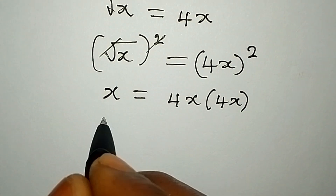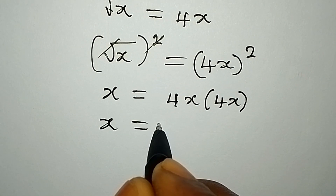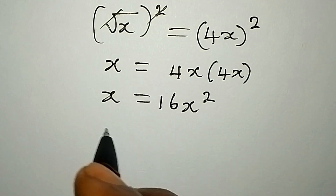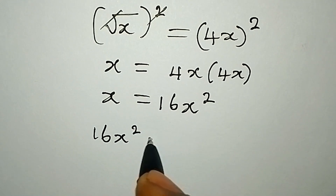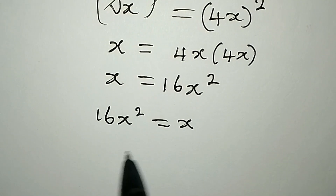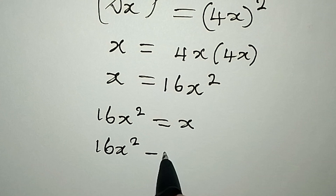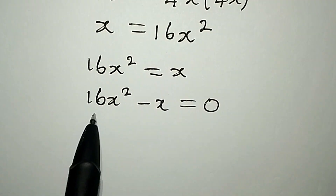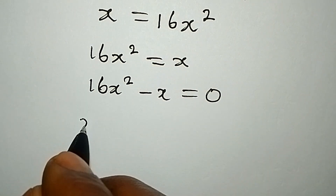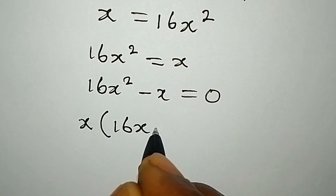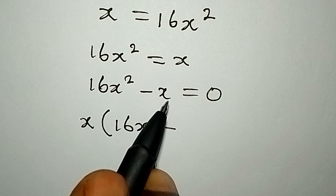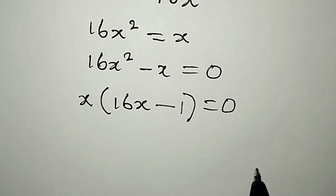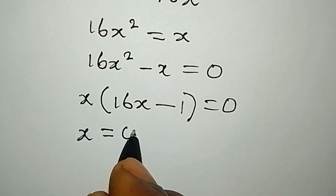So x will equal 4x times 4x, which will be 16x squared. This equally means that 16x squared is equal to x. Now 16x squared minus x is equal to zero — I have brought the x to the left hand side. Now x is common, so we have x times (16x minus 1).